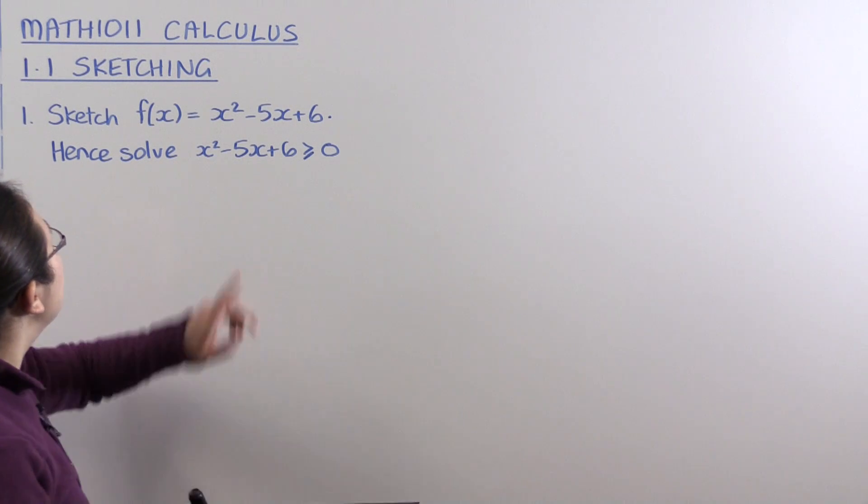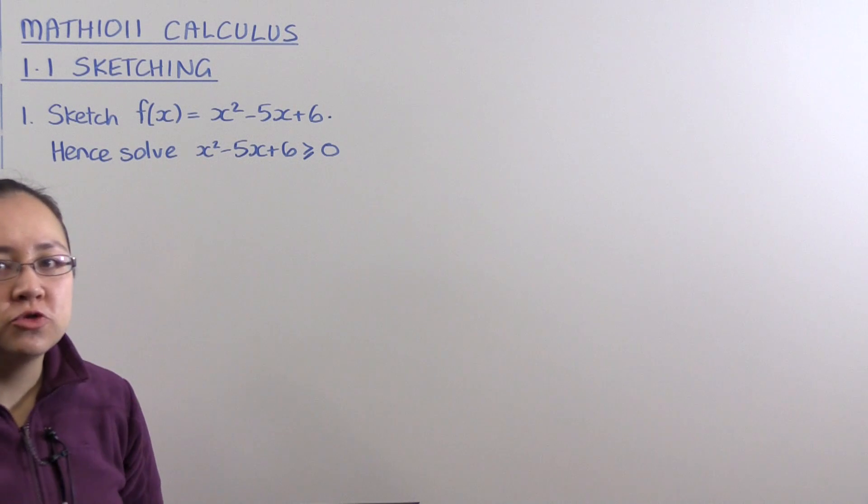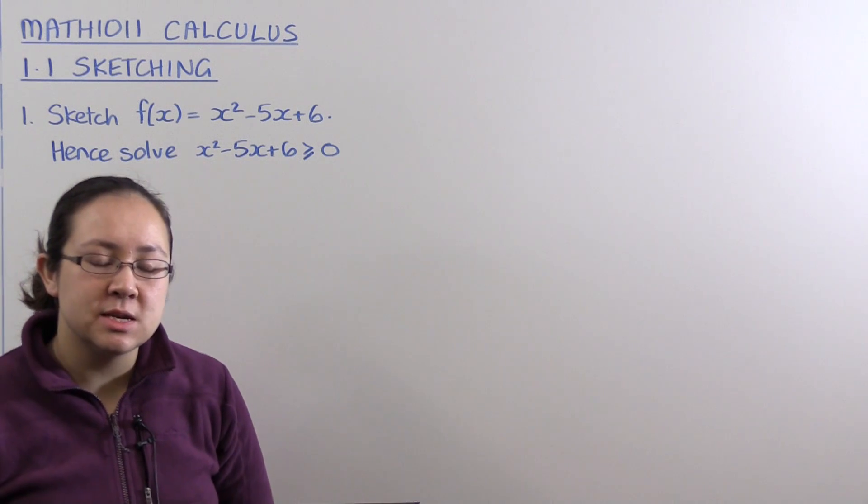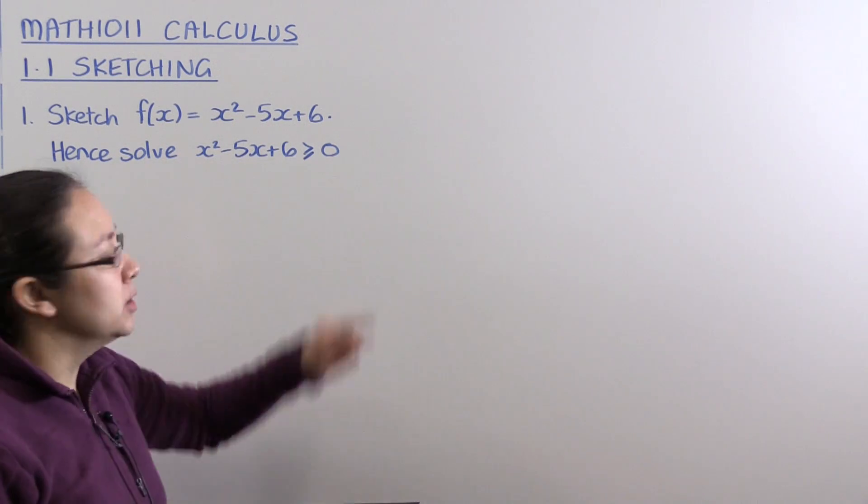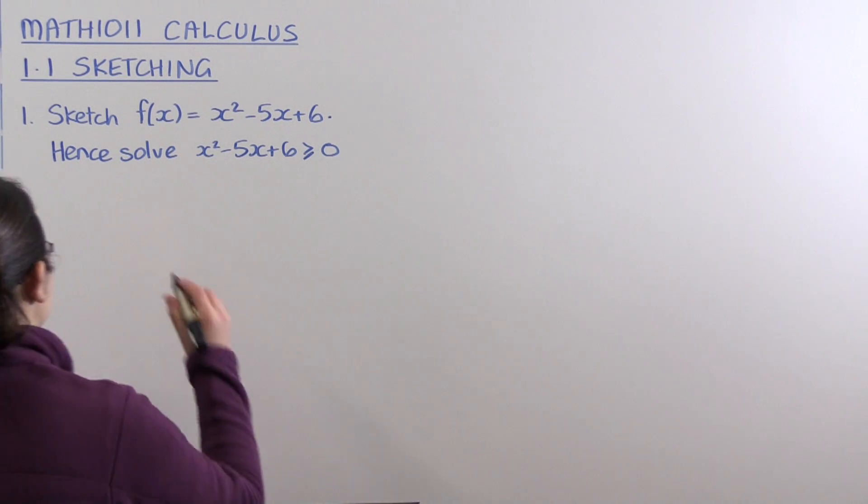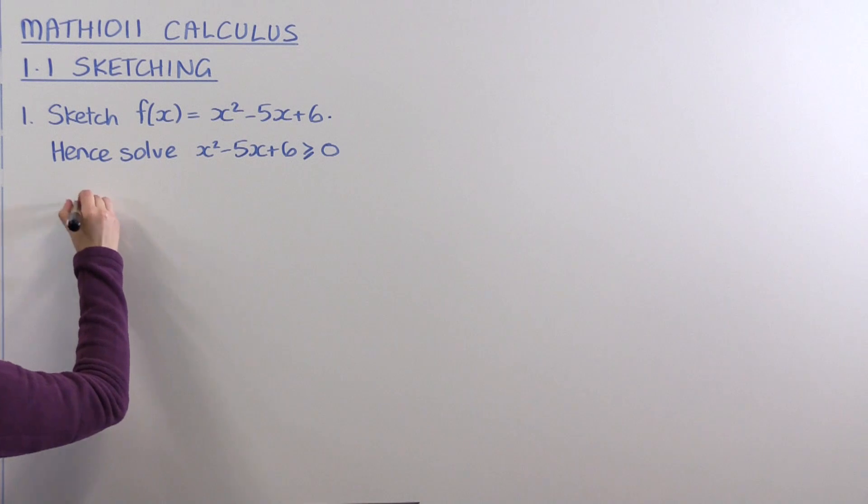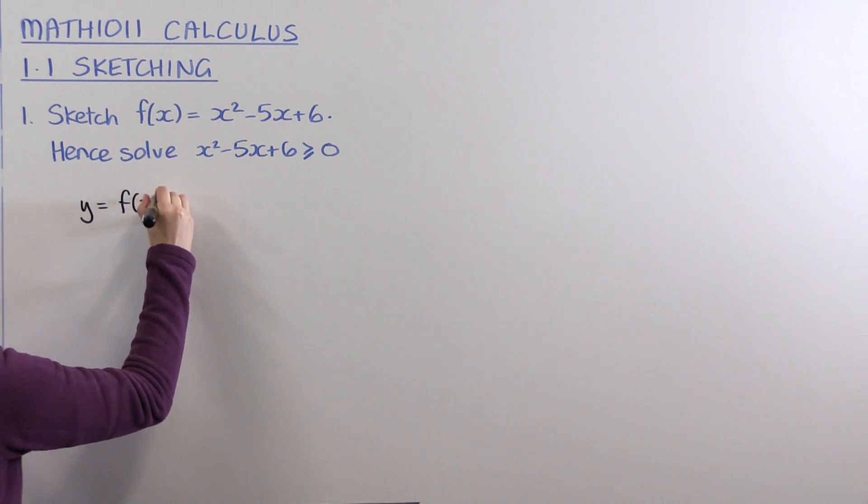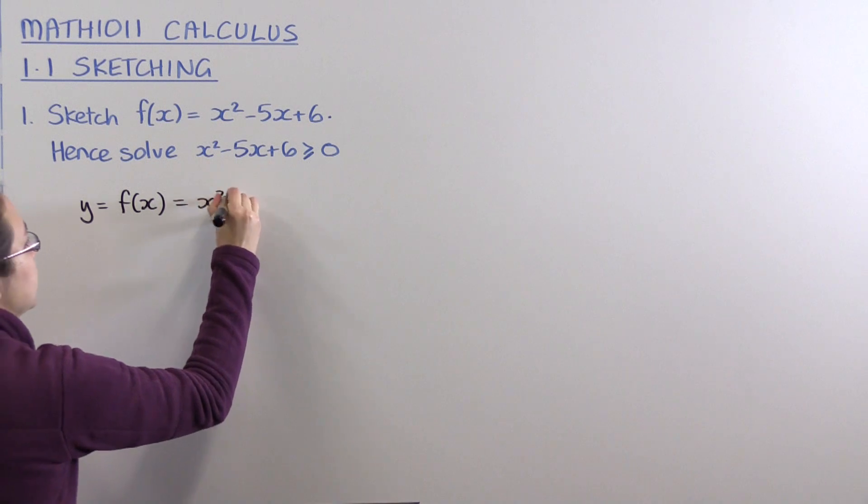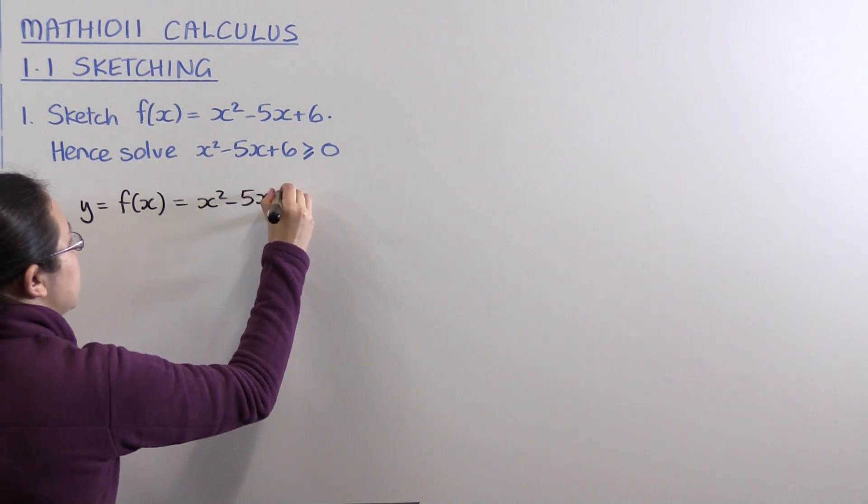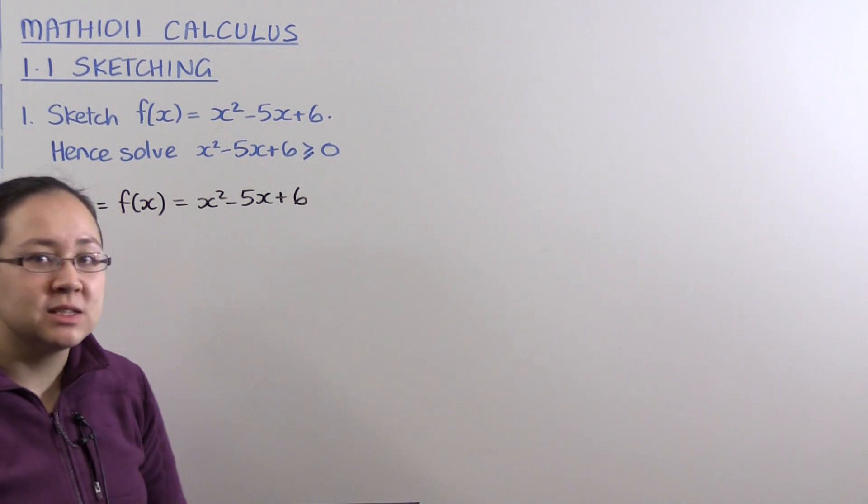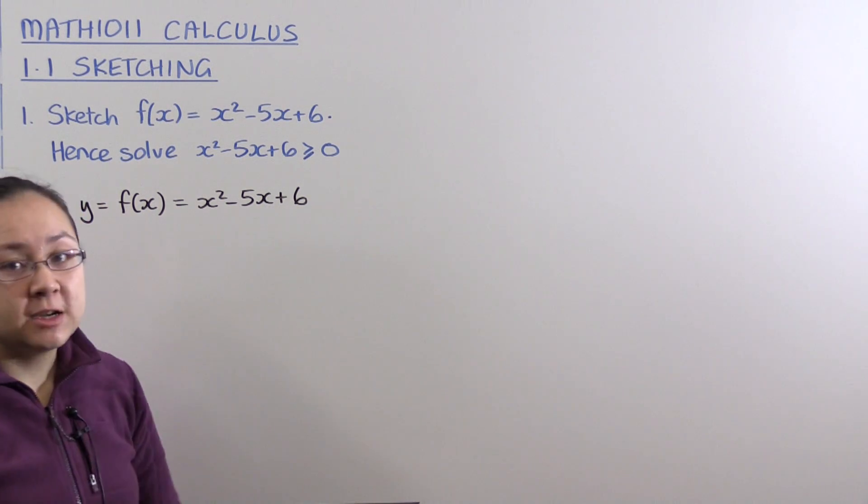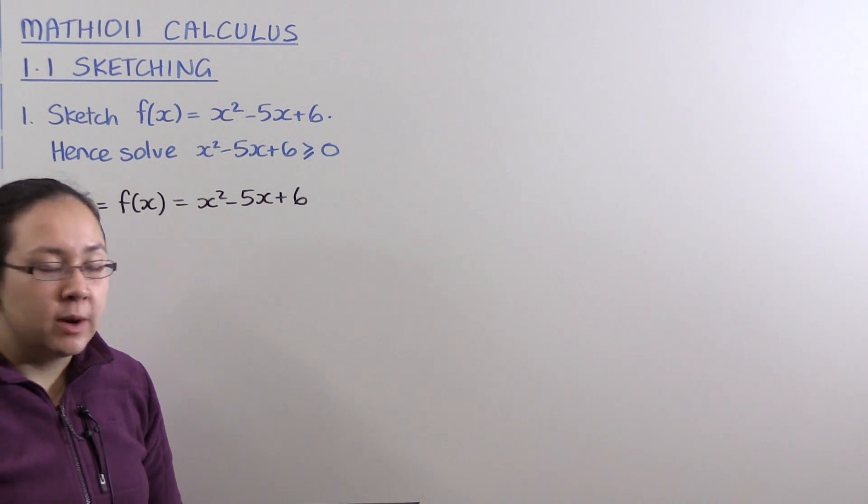Question 1 asks us to sketch the quadratic x² - 5x + 6, and then use that sketch to solve the quadratic inequality. So if we want to sketch y = f(x) where f(x) = x² - 5x + 6, we can see that this is pretty easy to factorize. That's a really good way to go.